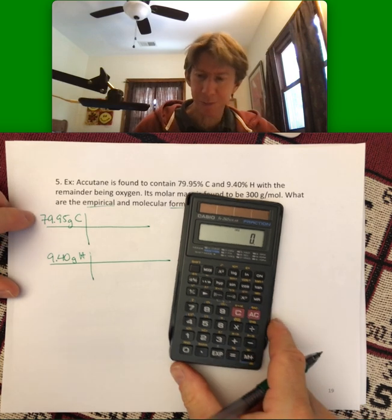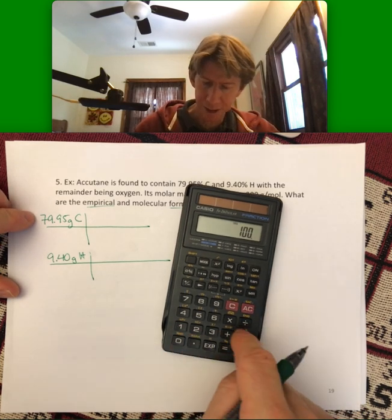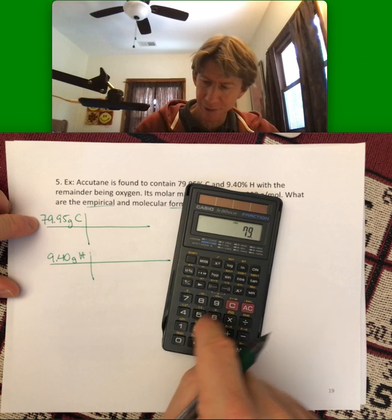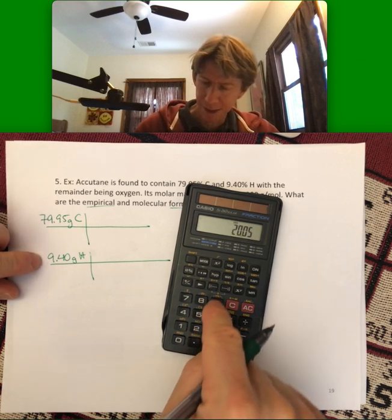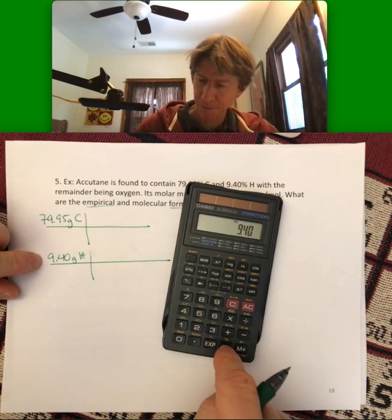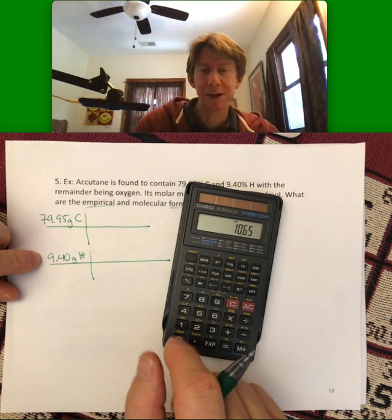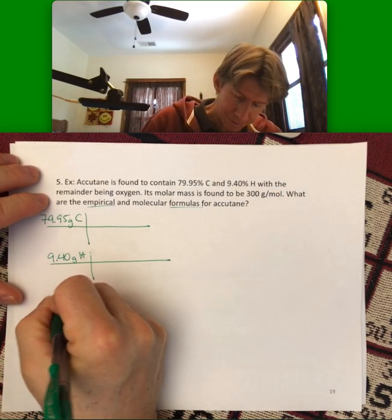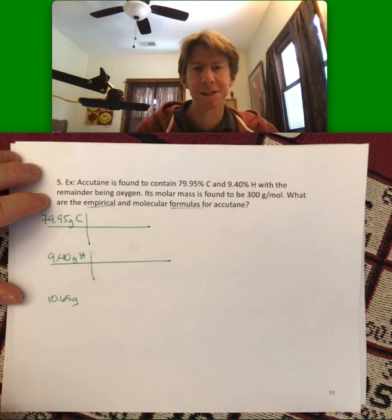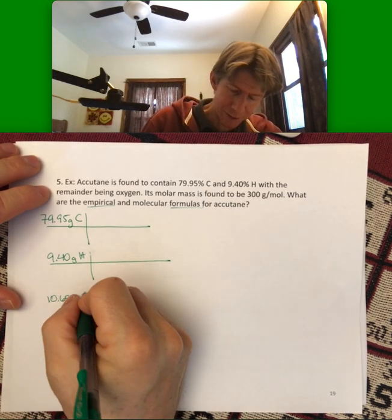I'm going to start with 100% and subtract off 79.95 and 9.40. I get 10.65% oxygen, and that's 10.65 grams of oxygen out of 100.